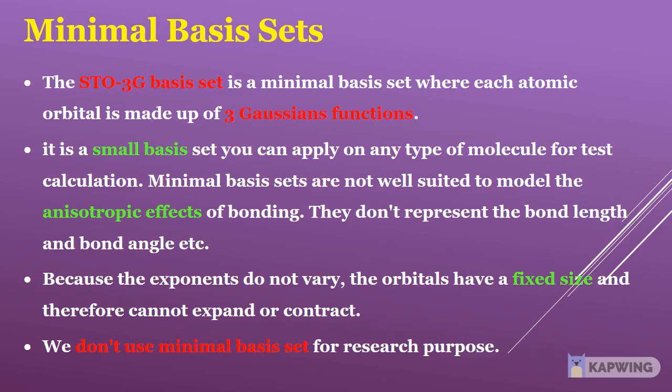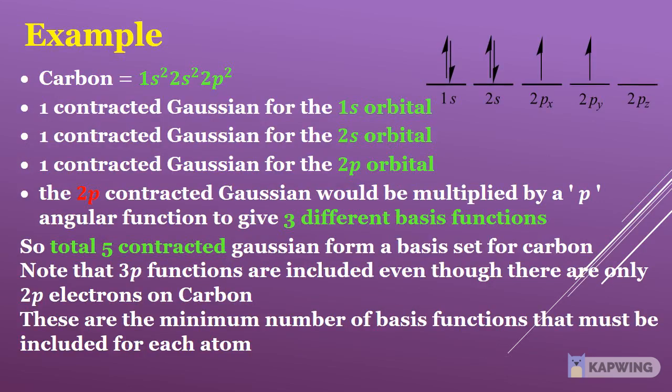We don't use a minimal basis set for research purposes. For a carbon atom: one contracted Gaussian for the 1s orbital, one for the 2s orbital, and one for the 2p orbital — the 2p contracted Gaussian is multiplied by a p angular function to give 3 different basis functions. So a total of 5 contracted Gaussians form the basis set for carbon.